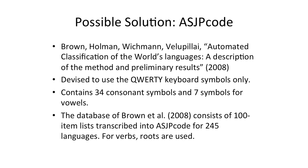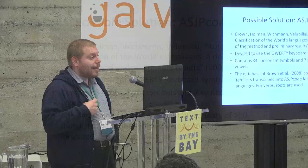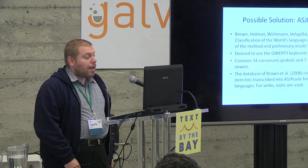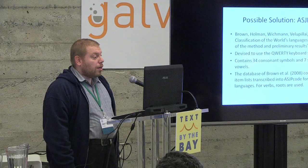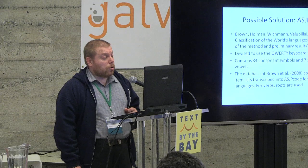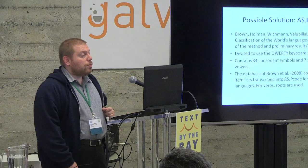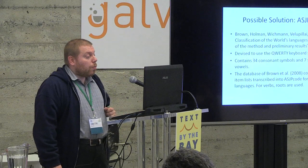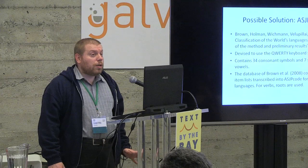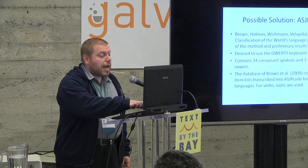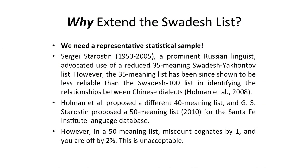One possible solution instead of phonemes is something like the ASJP code proposed by Holman and others. They devised a code that would allow entering data for Swadish lists using only the QWERTY keyboard, restricted to 34 consonant symbols and only seven symbols for vowels. I wish they continued to distinguish between E and U, for example, but the idea is good because phonemes are useful for capturing differences between dialects.